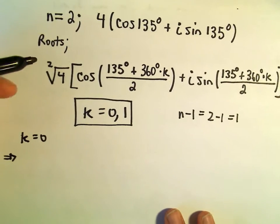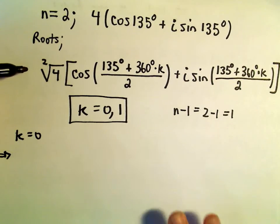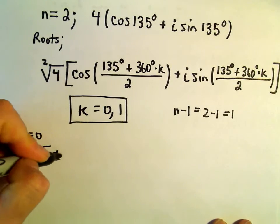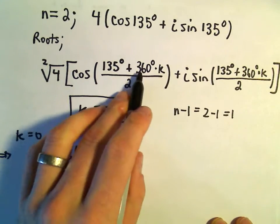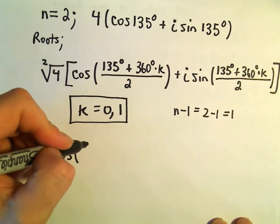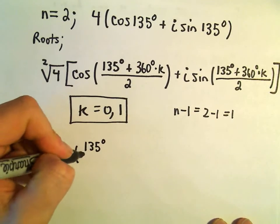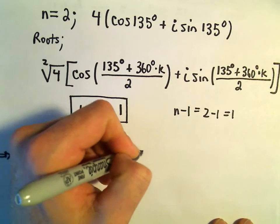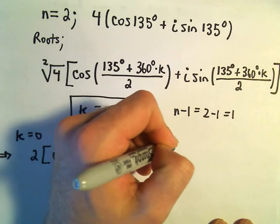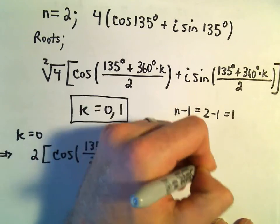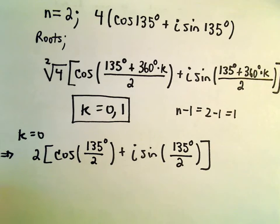Okay, so I'm going to plug k equals 0 here into our formula. So the square root of 4, that's just going to be 2. And then we would get cosine, well, if we plug in k equals 0, this term will be 0. So we'll be left with 135 degrees over 2, plus i sine of, well, 135 degrees over 2. So that will be one of our complex numbers.